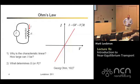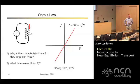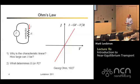There are a couple of questions we'll be thinking about here — like why is the characteristic linear, and how large can V be and still have the characteristic be linear? But most importantly, what determines the magnitude of the conductance when we have a hunk of semiconductor, a chunk of metal, or a very small conductor like a nano-electronic device?